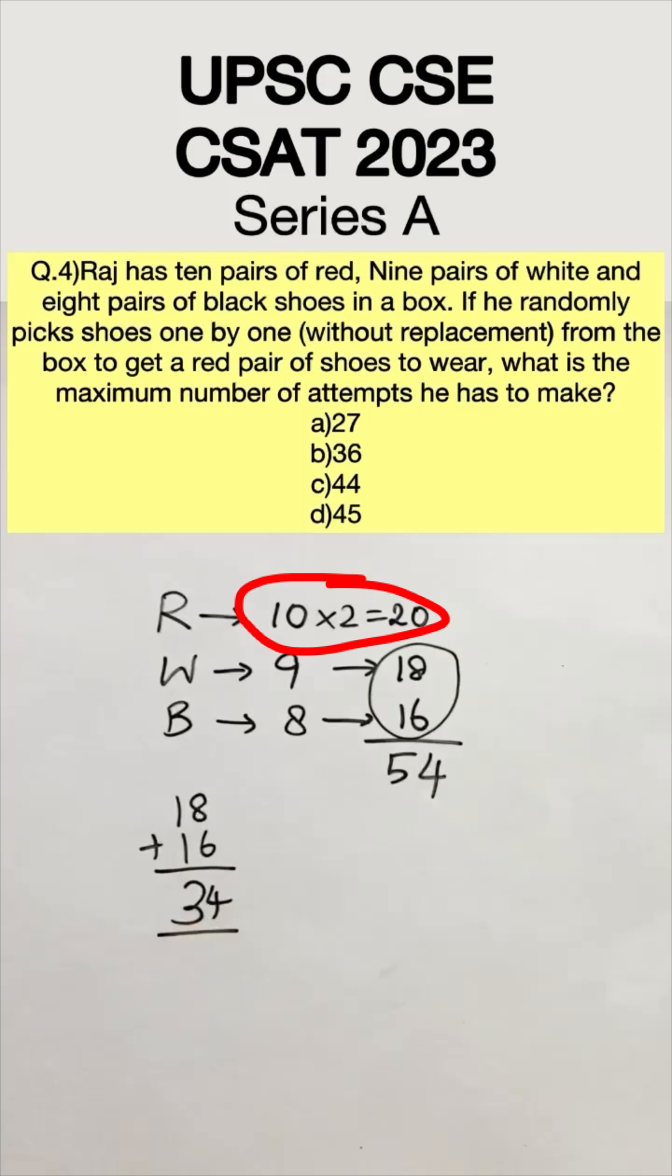Now we know that there are 10 left shoes and 10 right shoes in red. And we also found out that from the 35th shoe it's going to be a red shoe.